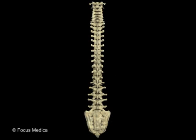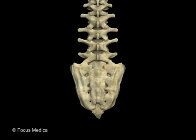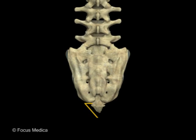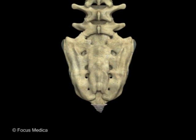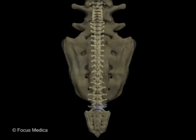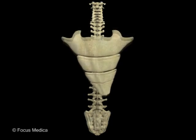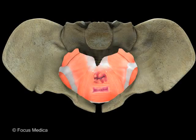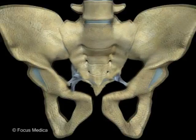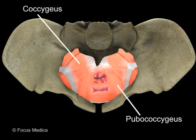The coccyx or tailbone is the triangular caudal segment of the spine located at the end of the lower vertebral column. The coccyx serves as an attachment site for tendons, ligaments, and muscles.